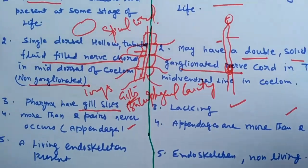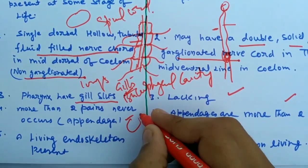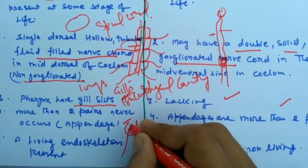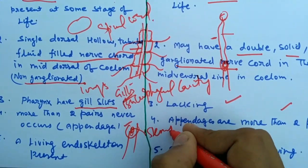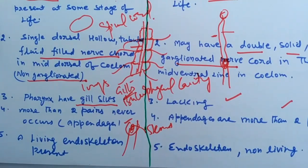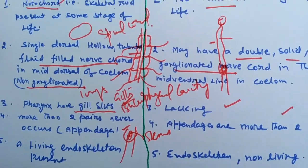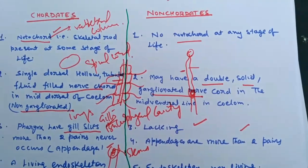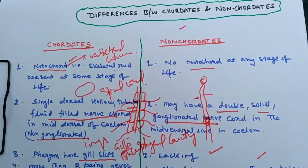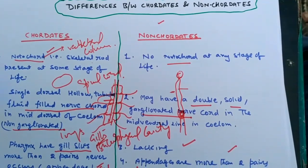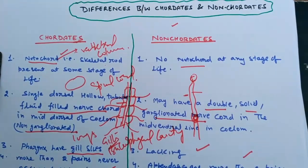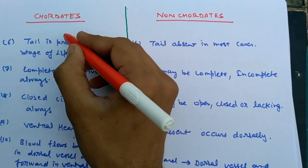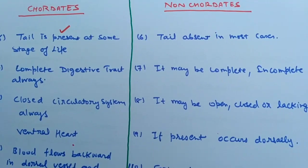The next difference is the living endoskeleton. In chordates, the bones are living structures, having Haversian canals and consisting of stem cells that differentiate into various types of blood cells. In non-chordates, the endoskeleton is non-living. I hope this difference is clear to you.